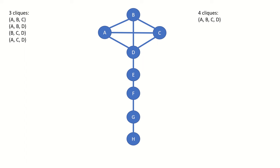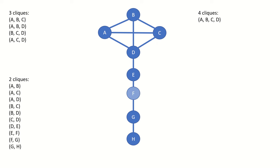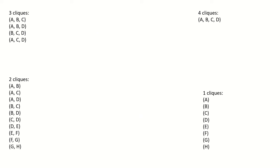Here are all the two-cliques for this graph listed out. We even consider each individual vertex to be a clique, specifically a one-clique. For some purposes, we can define the graph formed from the empty set of vertices to be a zero-clique. Now that you're familiar with cliques, let's see how we can apply them to create a graph operation — the simplex.